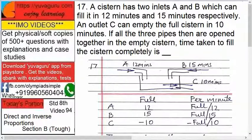Now A can fill separately that tank in 12 minutes. Suppose if B and C are not there, then A can fill it in 12 minutes. B can fill it in 15 minutes separately. And C can empty the full tank in 10 minutes.